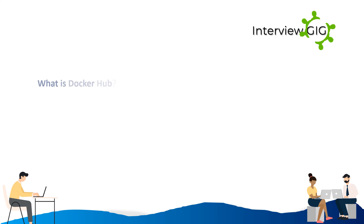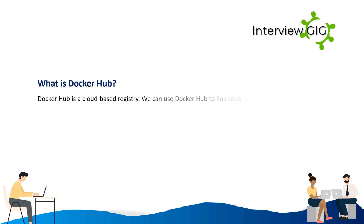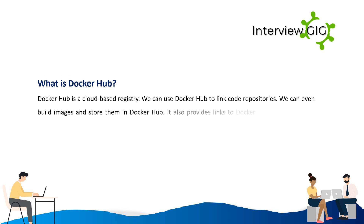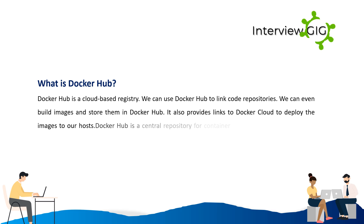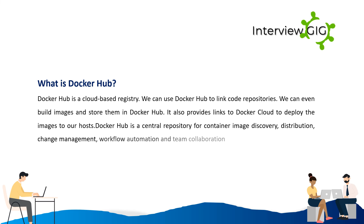Docker Hub is a cloud-based registry where we can link code repositories, build images, and store them. It provides links to Docker Cloud to deploy images to our hosts. Docker Hub is a central repository for container image discovery, distribution, change management, workflow automation, and team collaboration.